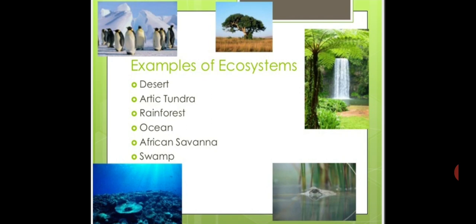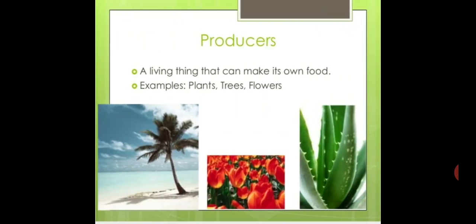Some more examples to understand ecosystem: An ecosystem can be a desert, arctic tundra, rainforest, ocean, African savannah, or a swamp. These are different examples of ecosystems.